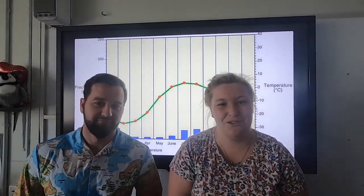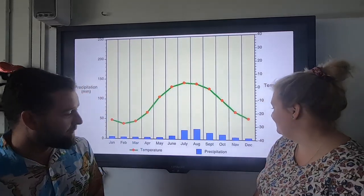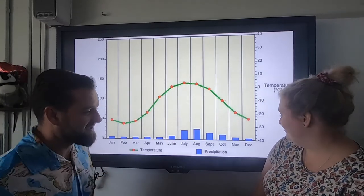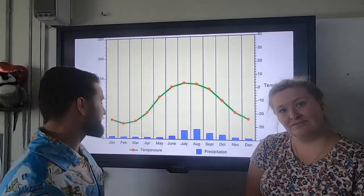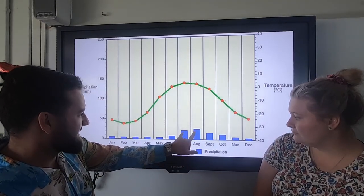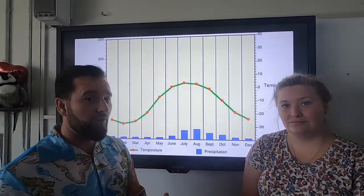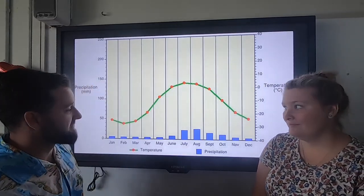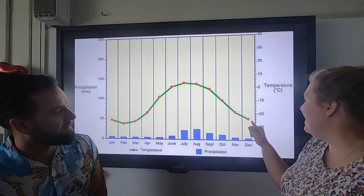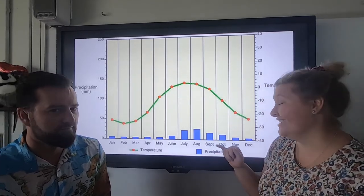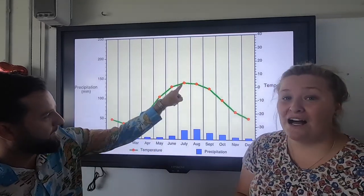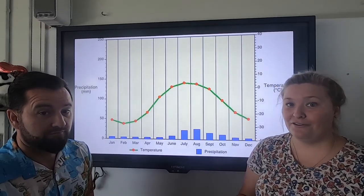We are actually in the tundra — northern Canada. Not many trees, a lot of permafrost. Precipitation is not too dissimilar from the desert: pretty much every month has around 10 millimetres, besides two months where it gets up to about 20 millimetres. Almost all precipitation that falls would come as snow. The temperature line starts at about minus 25 degrees. We're only getting up to about 2 degrees Celsius. There's only one month — July — where it gets above zero, which is why the soil is permanently frozen. That's called permafrost.